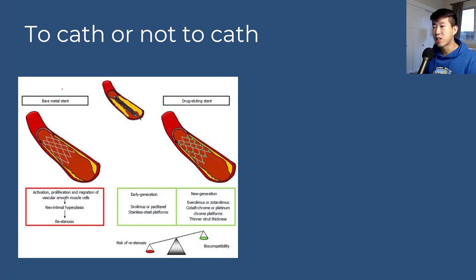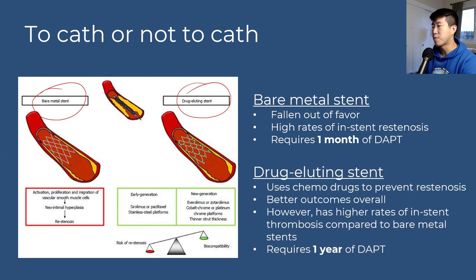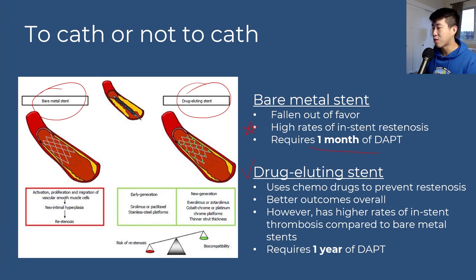There are two types of stents: bare metal stents and drug-eluting stents. Bare metal stents have fallen out of favor due to high rates of in-stent restenosis, though they only require one month of dual antiplatelet therapy. Drug-eluting stents are preferred, using chemotherapy drugs to prevent neointimal hyperplasia and restenosis. They have better outcomes but require one year of dual antiplatelet therapy before switching to monotherapy with aspirin alone, Plavix alone, or ticagrelor alone.